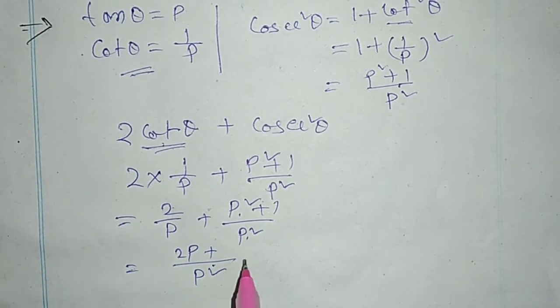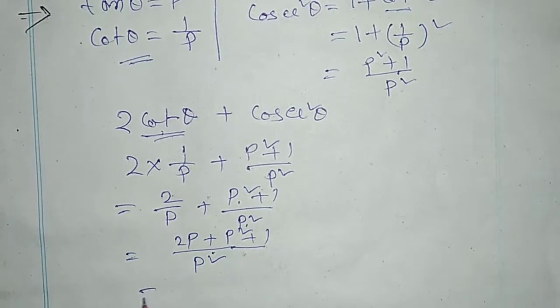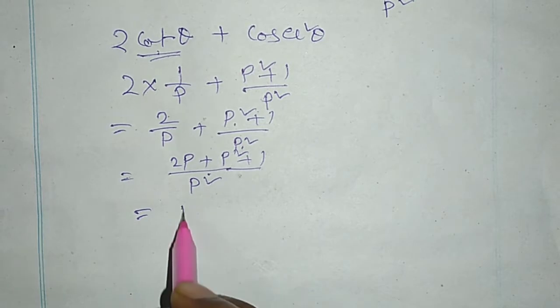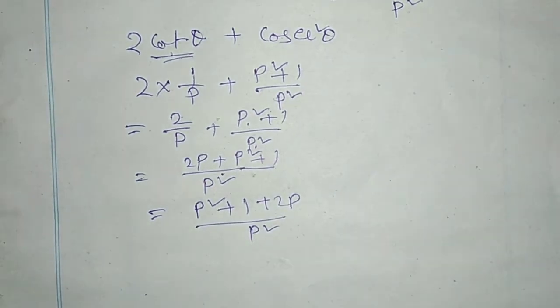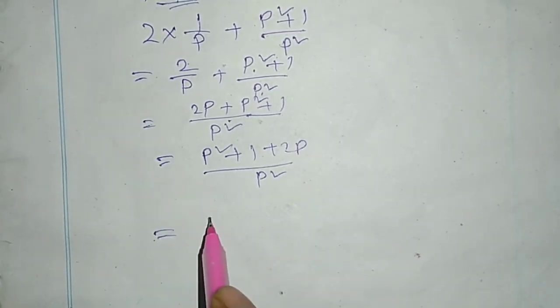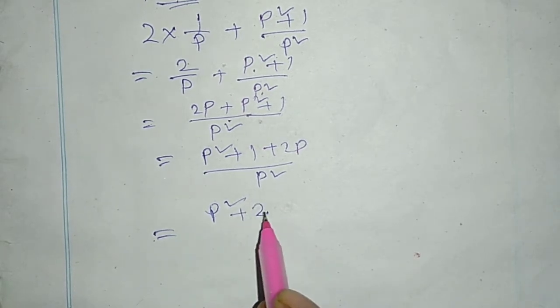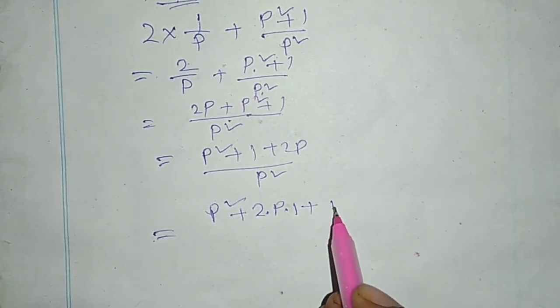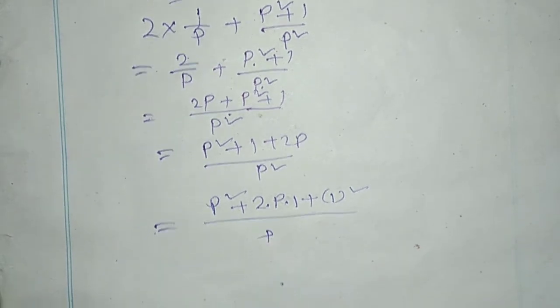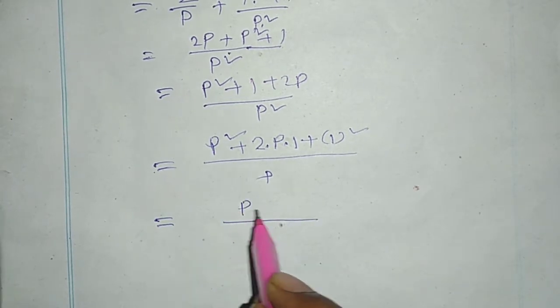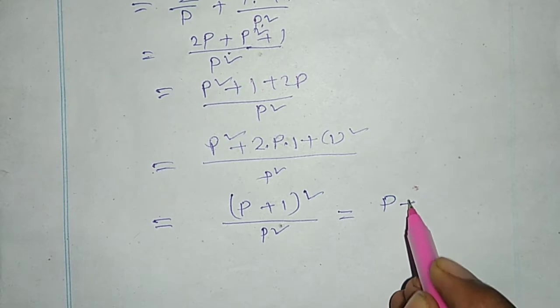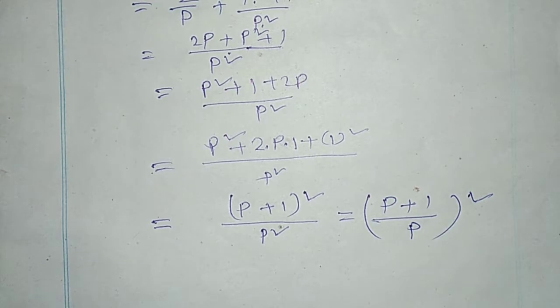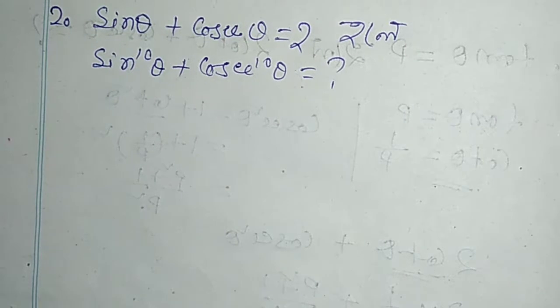It also could have p² plus 1 equal to p² plus 1 plus 2p by p². p² plus 1 plus 2p by p². That p² plus 2p plus 1, that is (p + 1)² by p². The answer is (p + 1)² by p². That's the whole square.